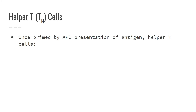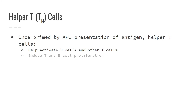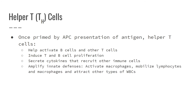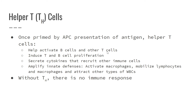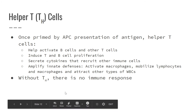Once primed by antigen presentation, a helper T cell can help activate B cells and other T cells. It can help induce T and B cells to multiply to form their clone armies, and secrete cytokines — like interferons and interleukins — that recruit other immune cells and amplify the innate response by activating macrophages and mobilizing lymphocytes. Helper T cells do a ton of things. Without them we're in big trouble, because they're activating both humoral and cellular immunity — they absolutely control adaptive immunity. This is illustrated very well by AIDS, which is the result of not having helper T cells.